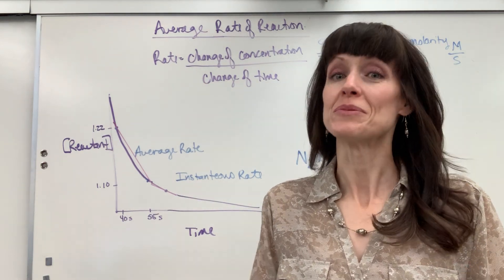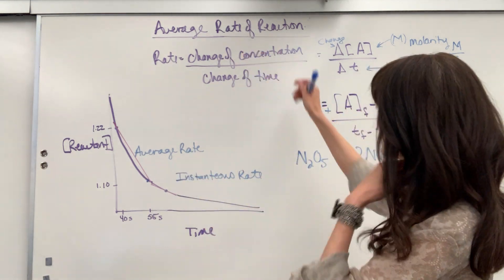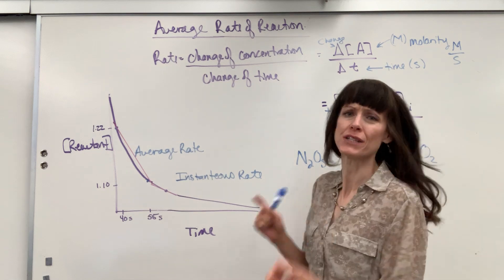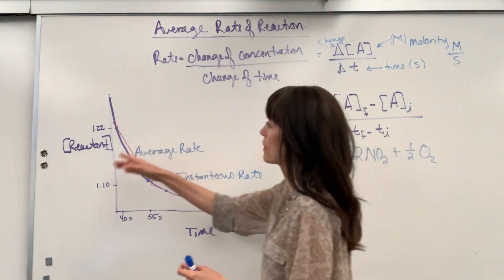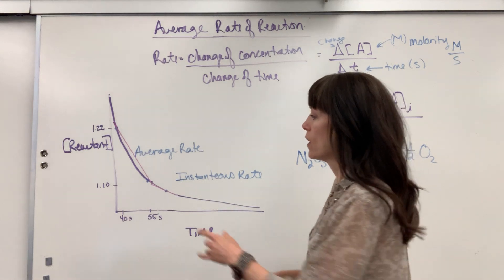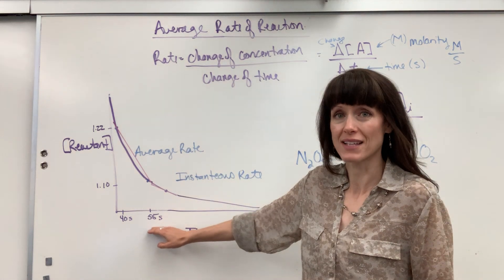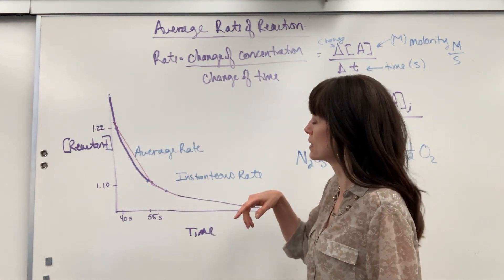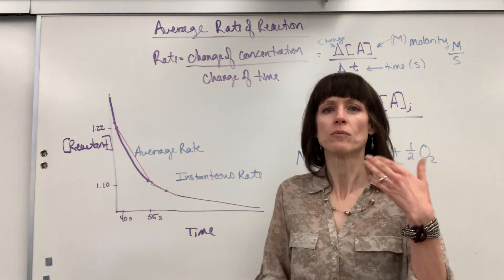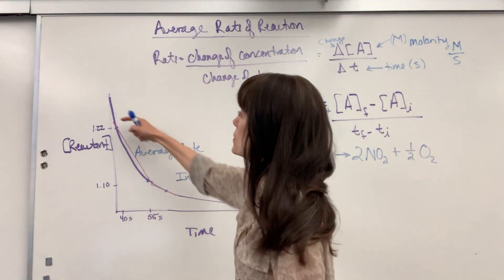We're going to look a little more in depth at the average rate of reaction. As a reminder, we're looking at two points. I have my reactant that's being consumed, and I want to know from two points — from 40 seconds to 55 seconds — what's the average rate that changes? How many moles per liter per second are being consumed, on average, between those two points?